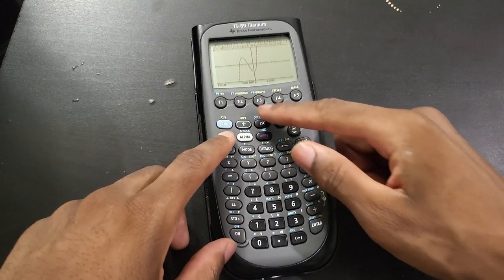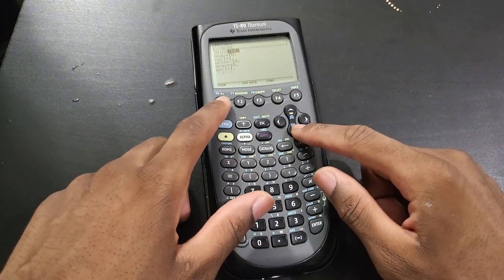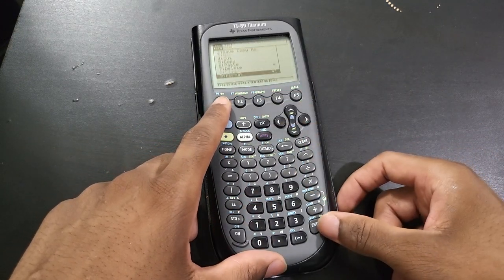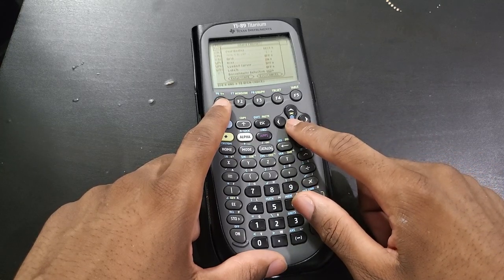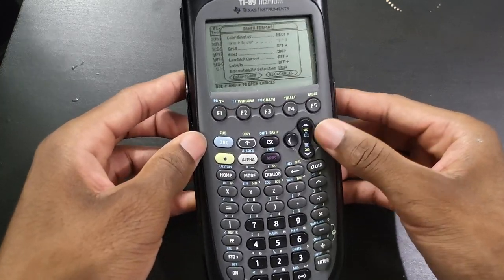So all you got to do is just go to the window settings, and F1, 9, and where it says discontinuity detection, you want to have that off.